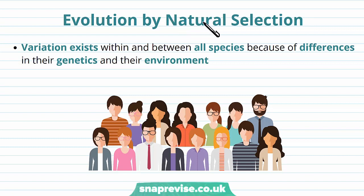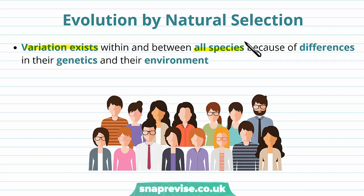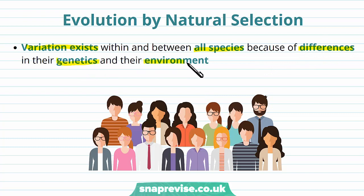Natural selection is one of the important forces that drives evolution. As we've already said in the previous video, variation exists within and between all species, and even within a particular species we see subtle variations between all organisms. This is because of differences from both the genetics of an organism and the environment in which they grow up.